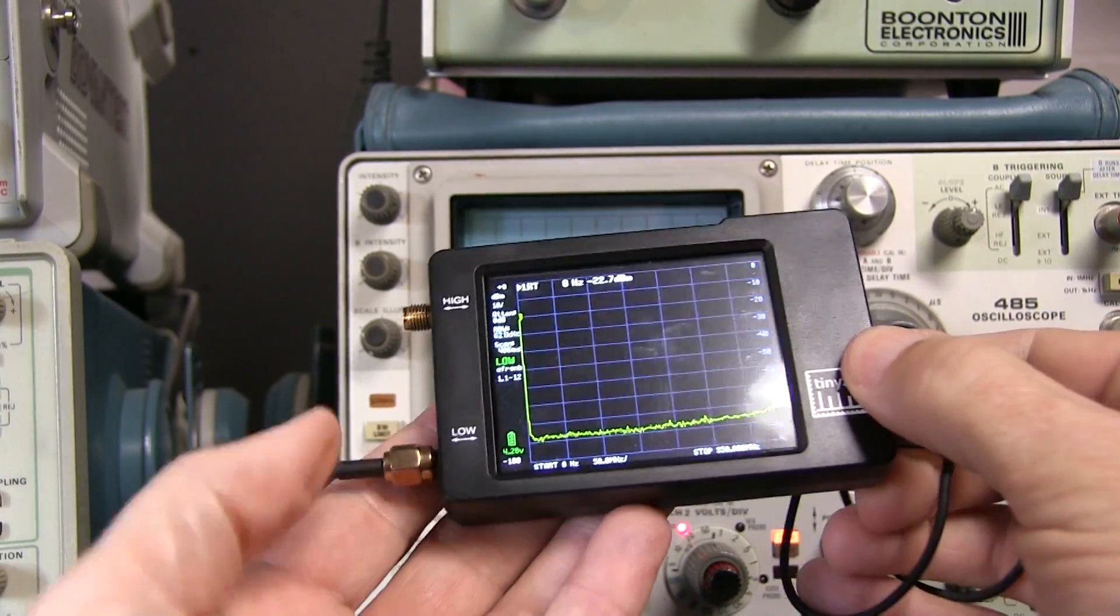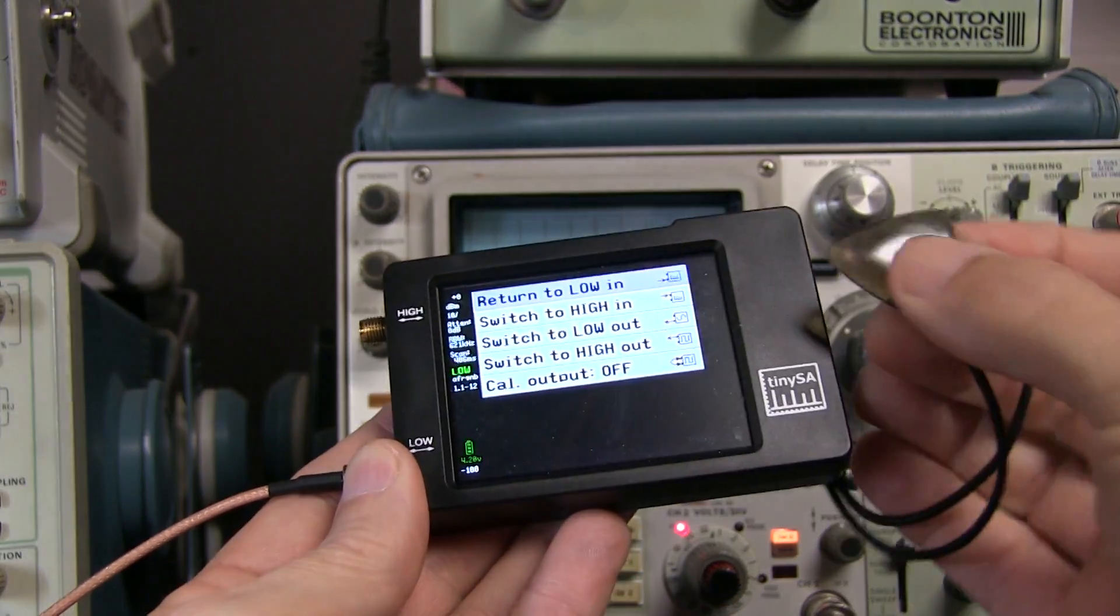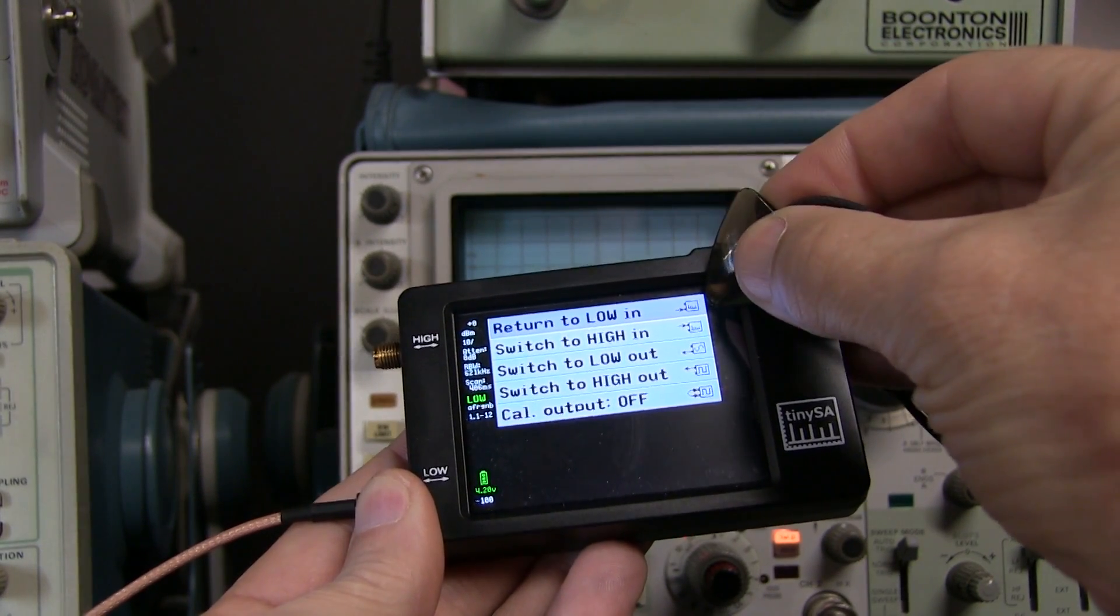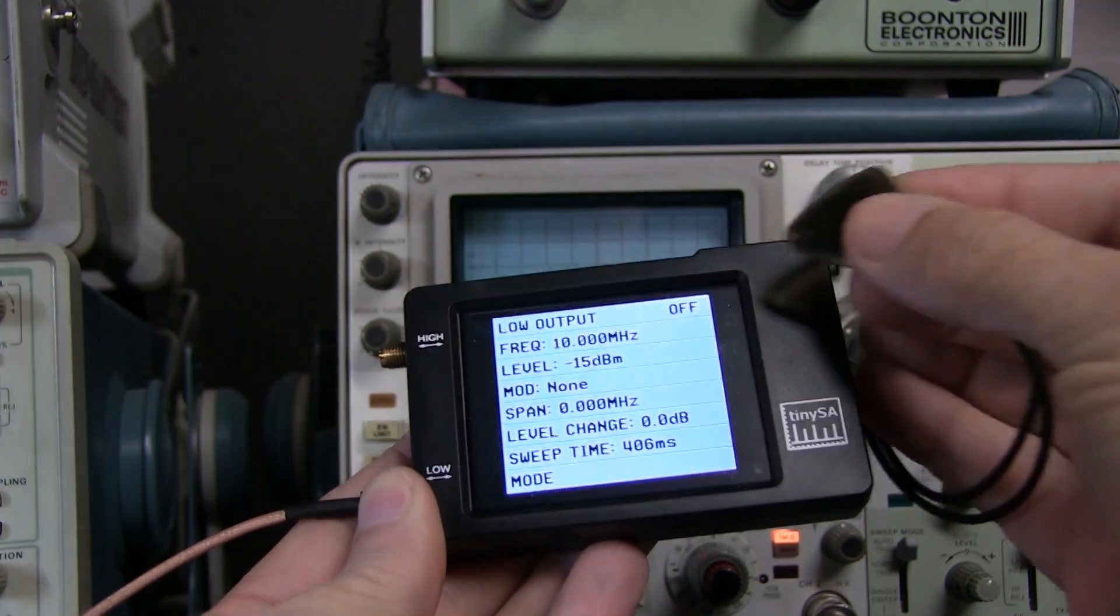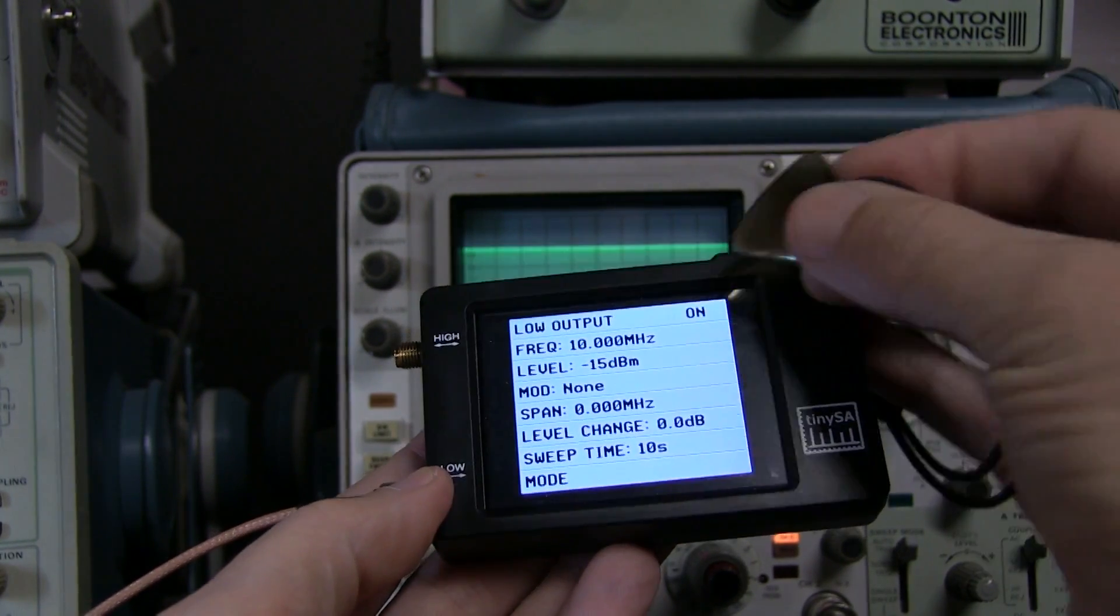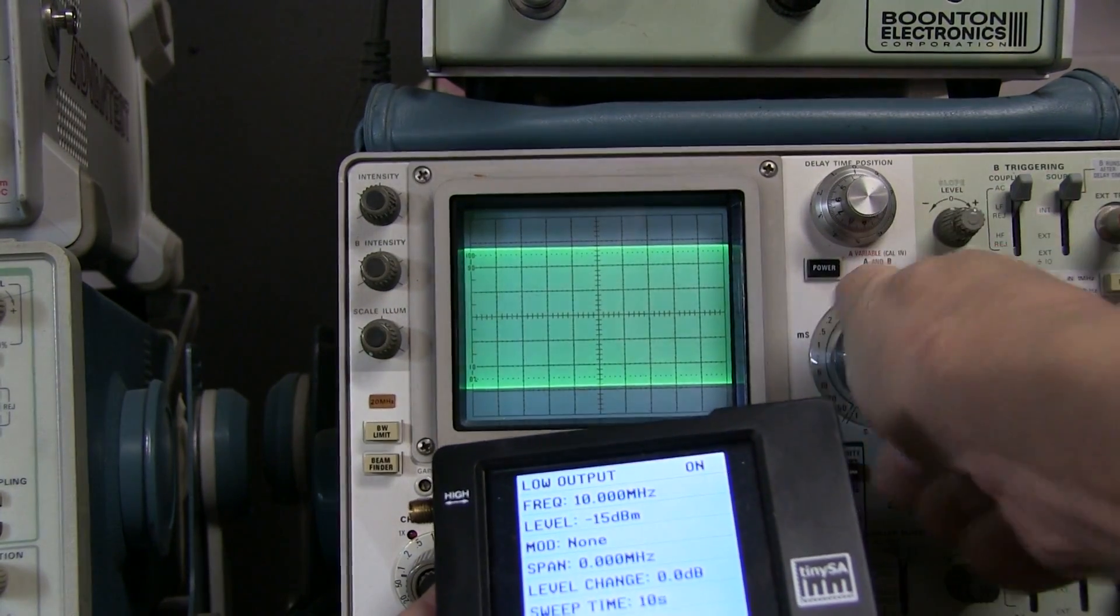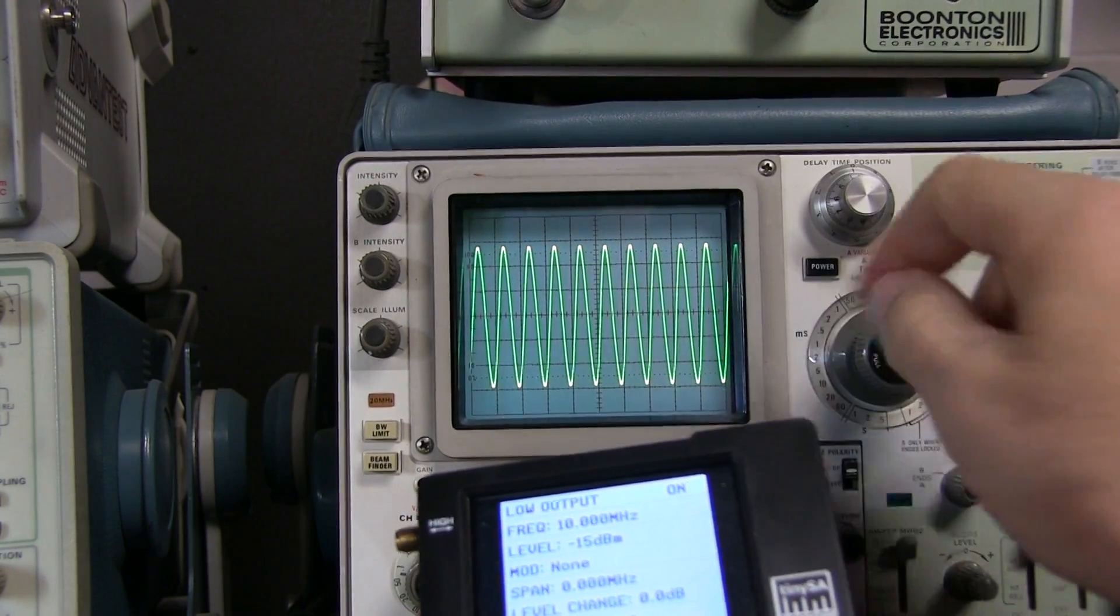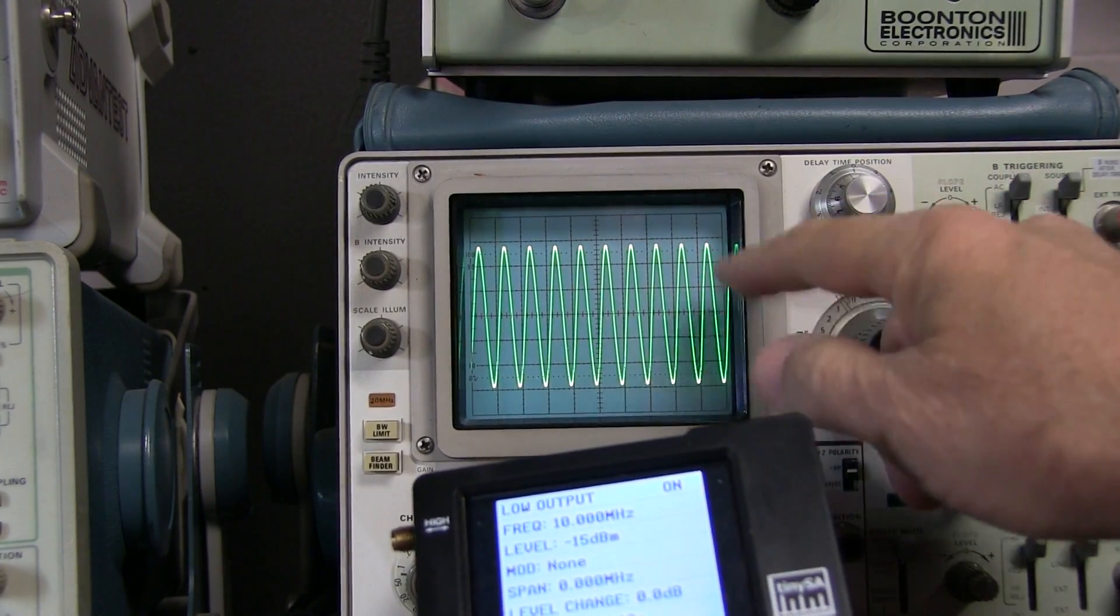So to configure the TinySA to give us the RF output here, I will touch the display, go into mode, and we're currently in the low in, as a spectrum analyzer input, but we'll switch it to low out. That'll give me an RF output on that low port. I'll turn the RF output on, and now it's on. We can actually see the RF envelope of that here. If we zoom way in on this, we get the triggering set up right here. We can actually see the sinusoidal output, in this case at 10 MHz, minus 15 dBm, onto the screen.